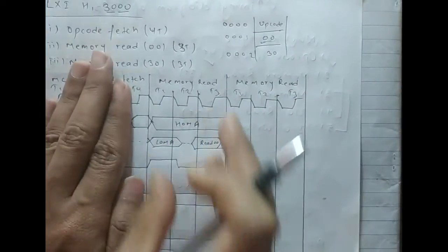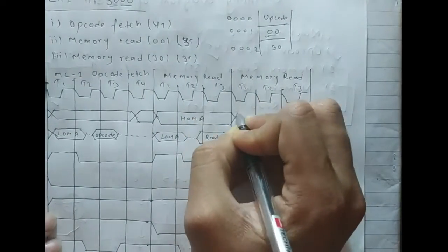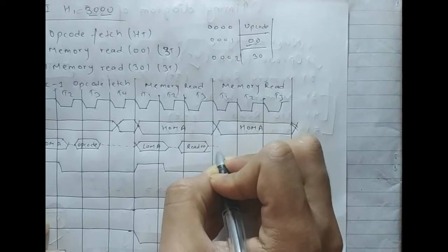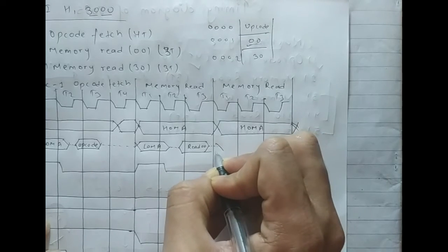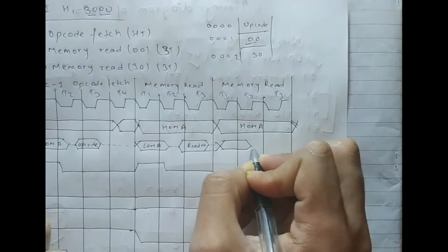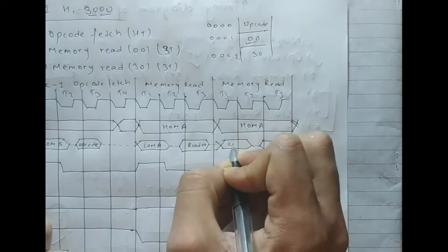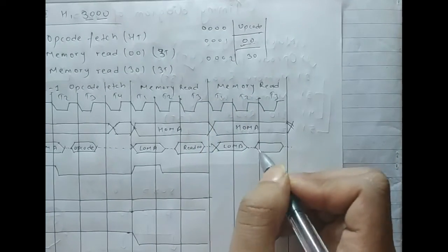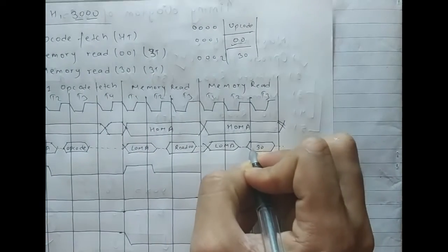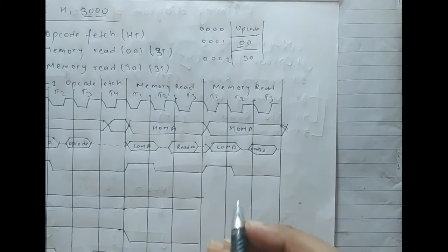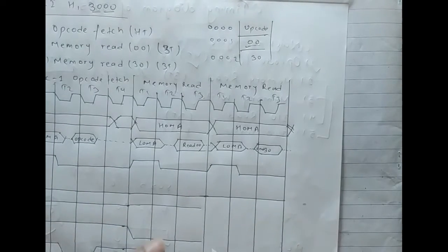Since the third machine cycle is also a memory read, we copy the same signals drawn in the previous part. Higher order memory address and lower order memory address are placed on the address bus. In this part the multiplexed bus acts as a data bus, so it will carry 30H. ALE will be high in the first state. The IO/M bar, S1, and S0 signals continue from the previous memory read cycle.